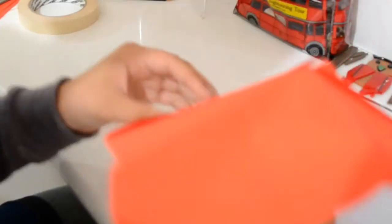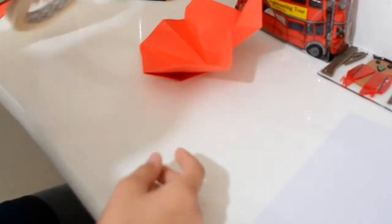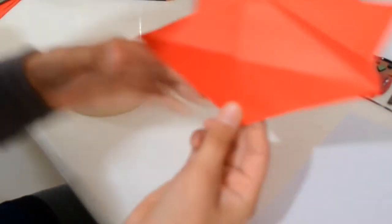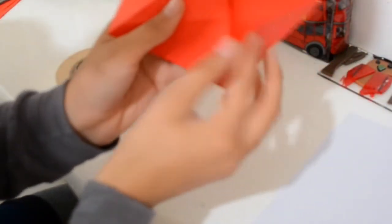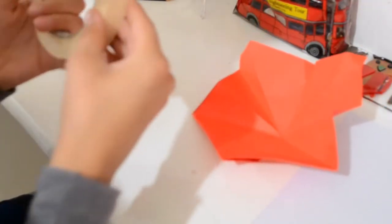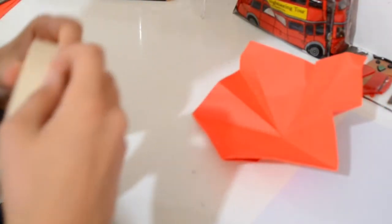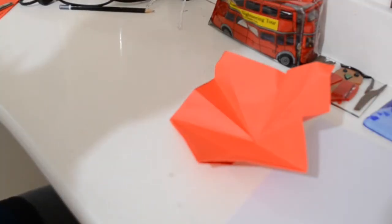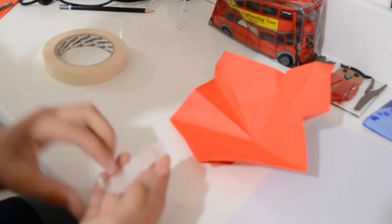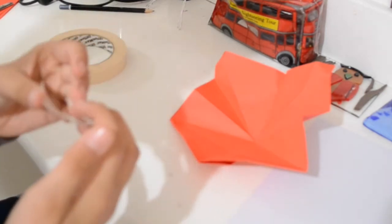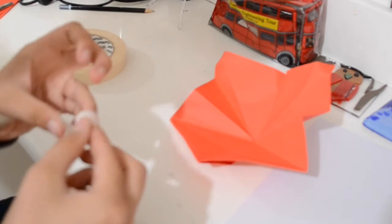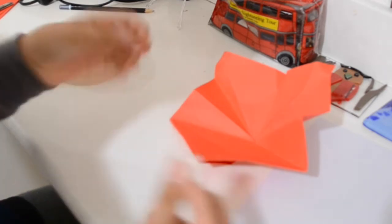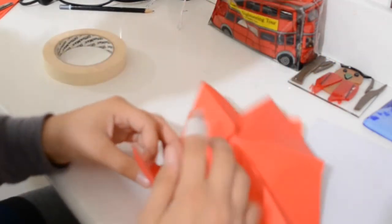Now we're going to sticky tape this back bit down so it doesn't come flapping up. So if you don't have double sided tape, which would be great, but I don't, you can just double over normal tape.